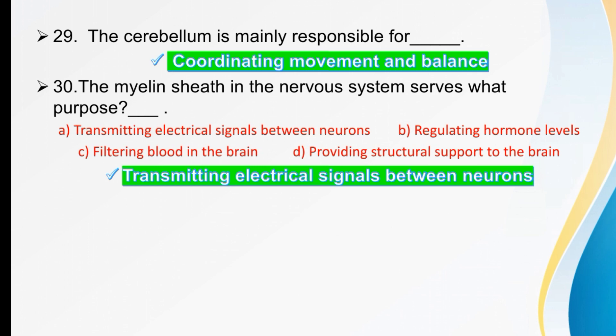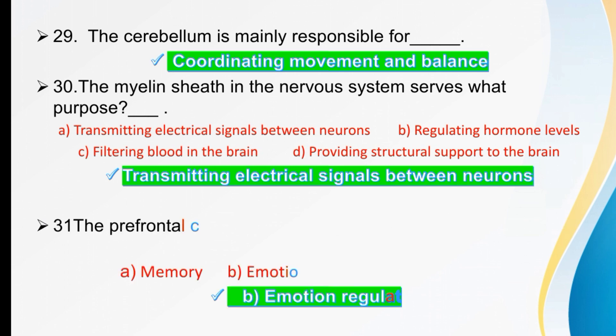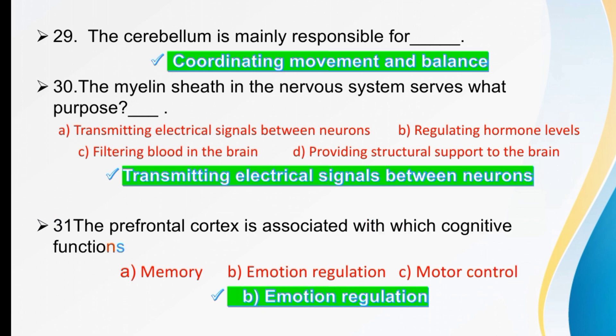The frontal cortex is associated with which cognitive function? Options are memory, emotion regulation, or motor control. The right option is emotion regulation. The right option is A.